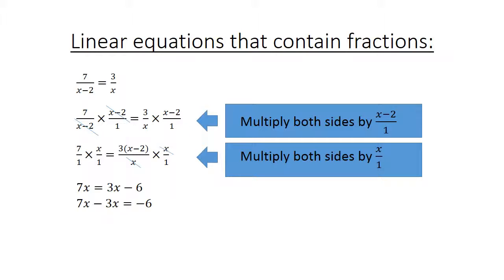7x minus 3x equals negative 6. Therefore 4x equals negative 6, and x equals negative 6 over 4, which simplifies to negative 3 over 2.